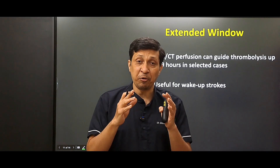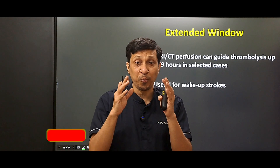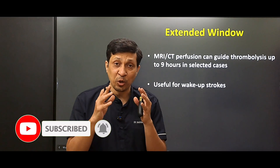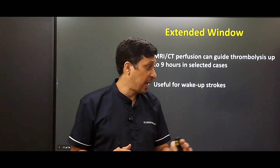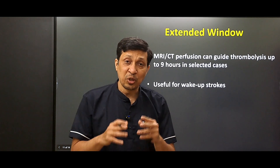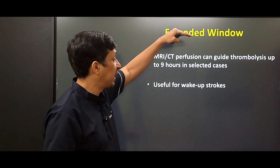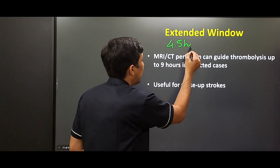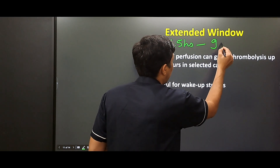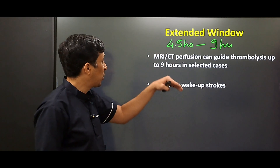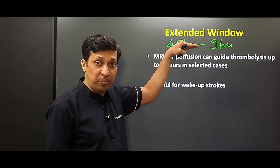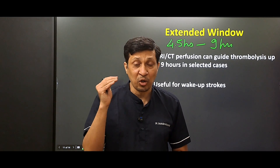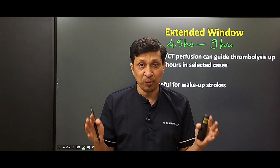If the patient arrives after 4.5 hours, or if the exact onset time is unknown — such as in wake-up stroke — an extended window up to 9 hours may apply. In these cases, the patient must undergo MRI or CT perfusion scan, and the neurologist will decide based on the report whether thrombolysis is appropriate.